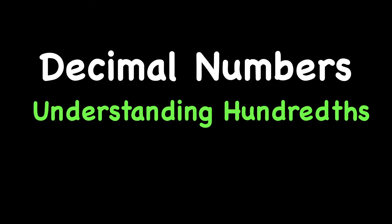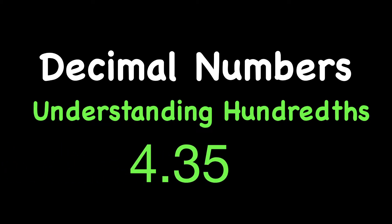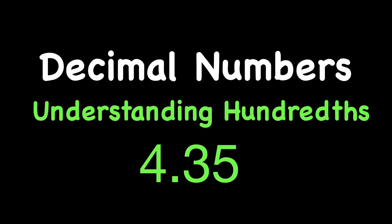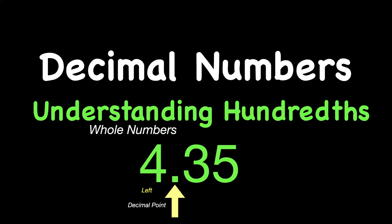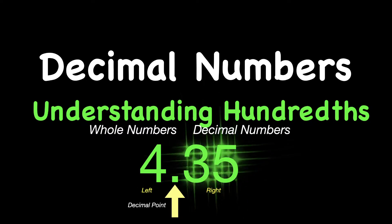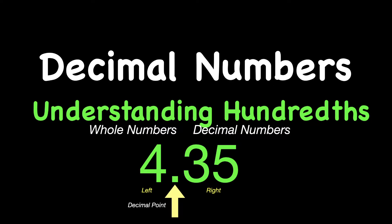Hey everyone, Mr. W here. Today's lesson is on Decimal Numbers, Understandings, Hundredths. So for example, the number 4 decimal point 3 5 — the decimal point in the middle has a job of separating the whole numbers on the left side, for example that 4, with the decimal numbers on the right side of the decimal point, the 3 and the 5, which would be the 35.